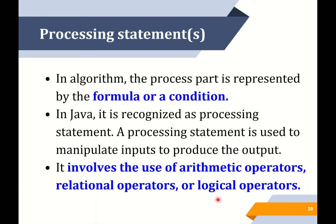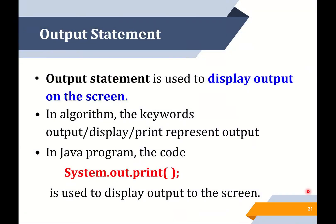Next, processing statement. In algorithm, the process part is represented by a formula or a condition. In Java, it is recognized as a processing statement. A processing statement is used to manipulate inputs to produce the output. It involves the use of arithmetic operators, relational operators, or logical operators. Output statement is used to display output on the screen. In algorithm, the keywords output, display, or print represent the output. In Java program, the code 'System.out.print' is used to display output to the screen.